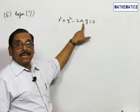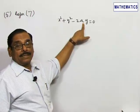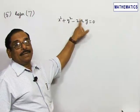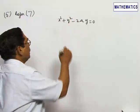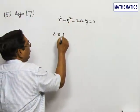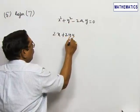You are having only one arbitrary constant and hence you try to differentiate once and eliminate the arbitrary constant. Differentiating: 2x plus 2y times y1 minus 2ay1 is equal to 0.